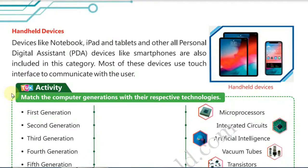Handheld devices have a touch screen through which we enter data, and a screen through which we can see the output or result. They have multimedia controls through which we can listen, watch, and capture images. You can easily carry them in your pocket without needing any special bag. Examples include our mobile phones and tablets.